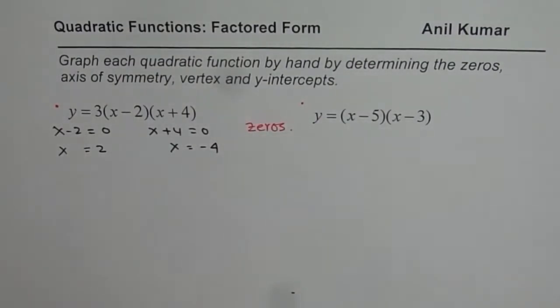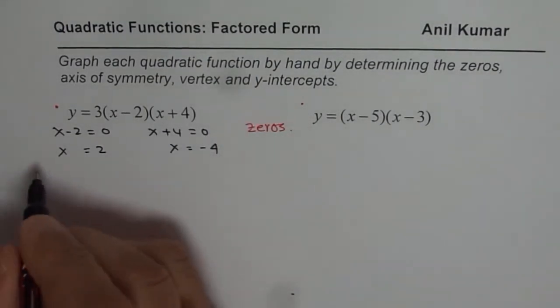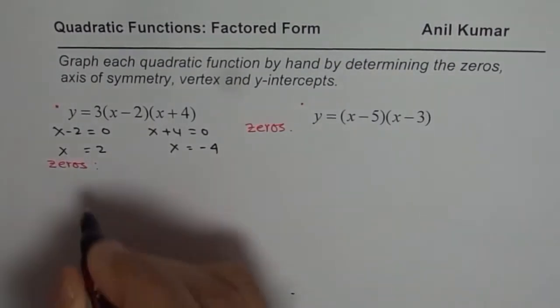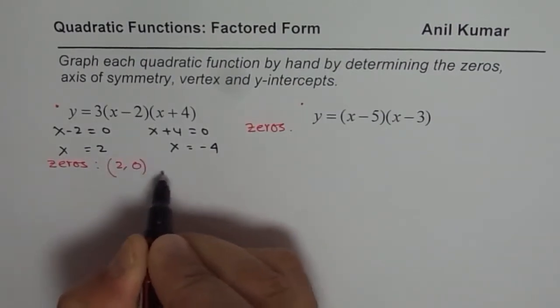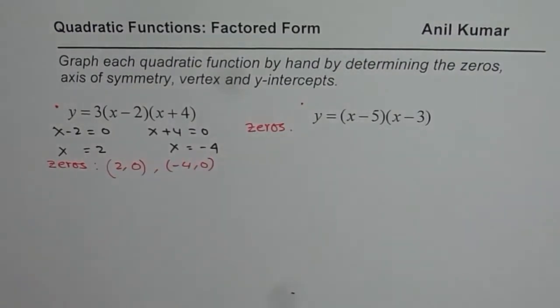So we have two zeros here. Let me write down the answers. We have zeros at (2, 0) and (-4, 0). So we got these zeros.